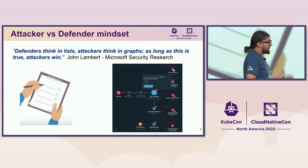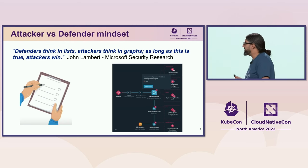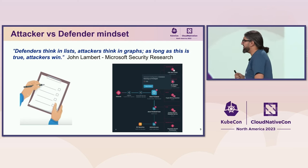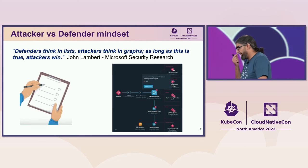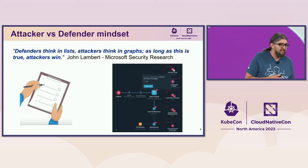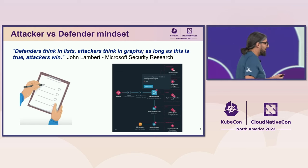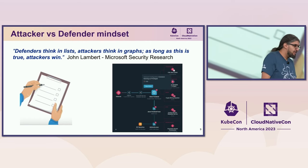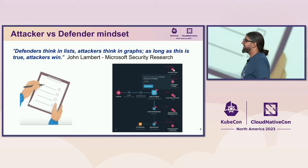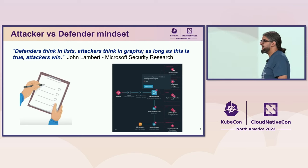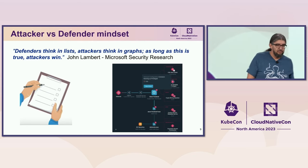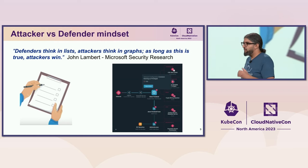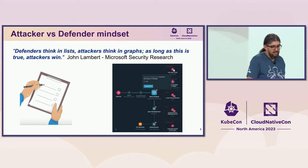Before going into threat modeling and adversary emulation, I'd like to mention this phrase from John Lemberg of Microsoft Security. Defenders think in lists — usually a list of compliance items or things to report to management or authority due to regulation. But attackers think totally differently. They move from one step to another until they get access to your system and get what they want. So it's really important to think the way an attacker does in order to protect your environment, not just check a compliance list.